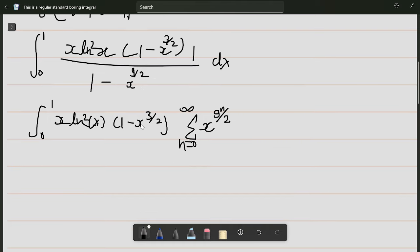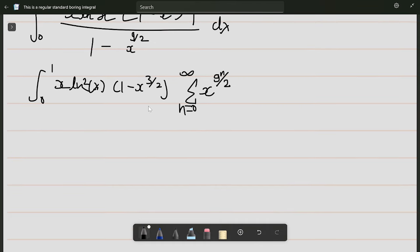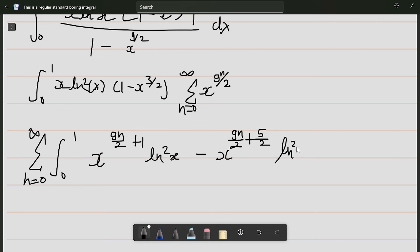I've used geometric series for 1/(1 - x^(9/2)). Now let's take these constants inside the integral and sum. This is a pretty standard technique to solve problems. From 0 to 1, this becomes x^(9n/2 + 1) ln²x minus x^(9n/2 + 5/2) ln²x dx.